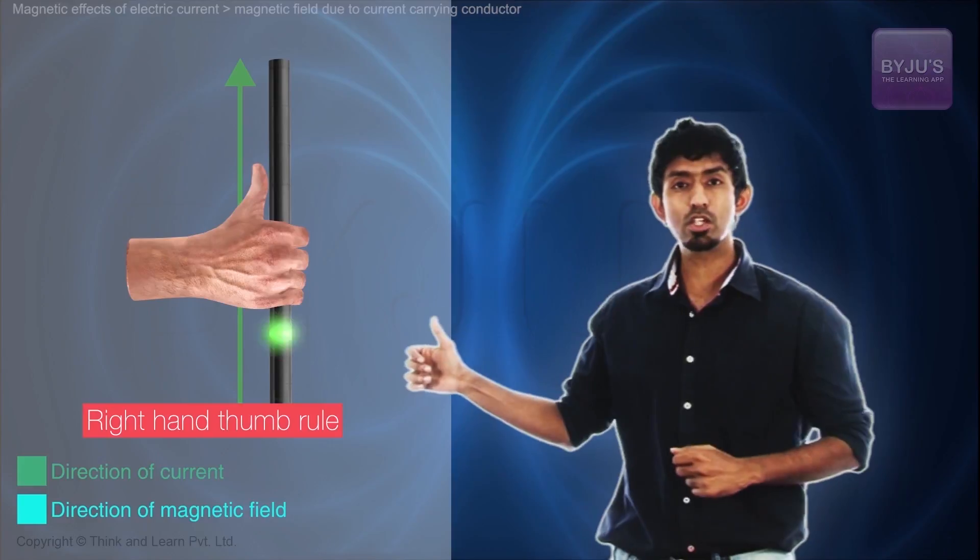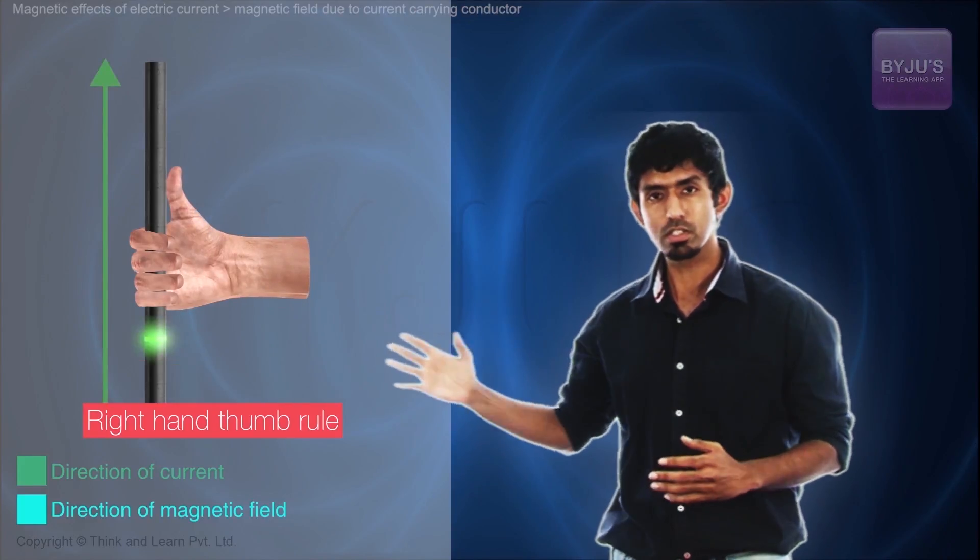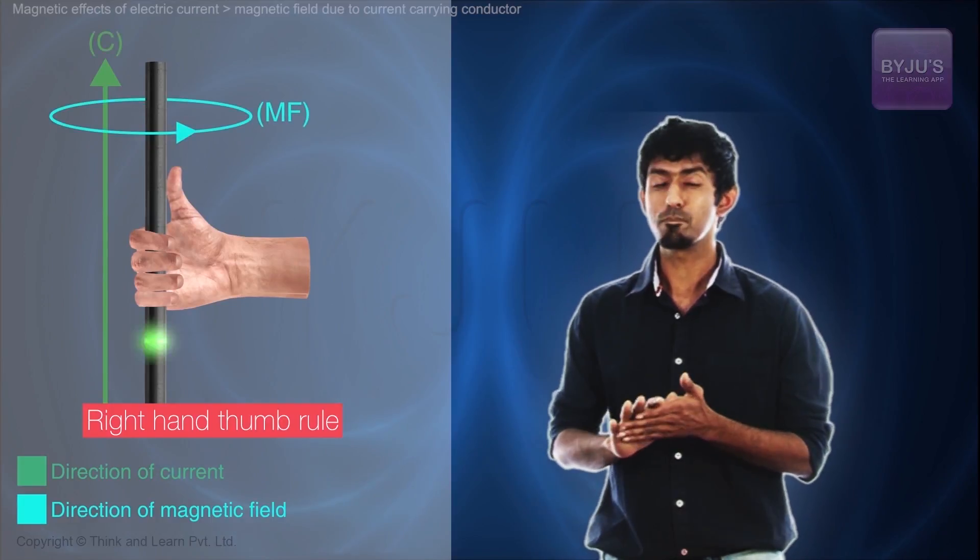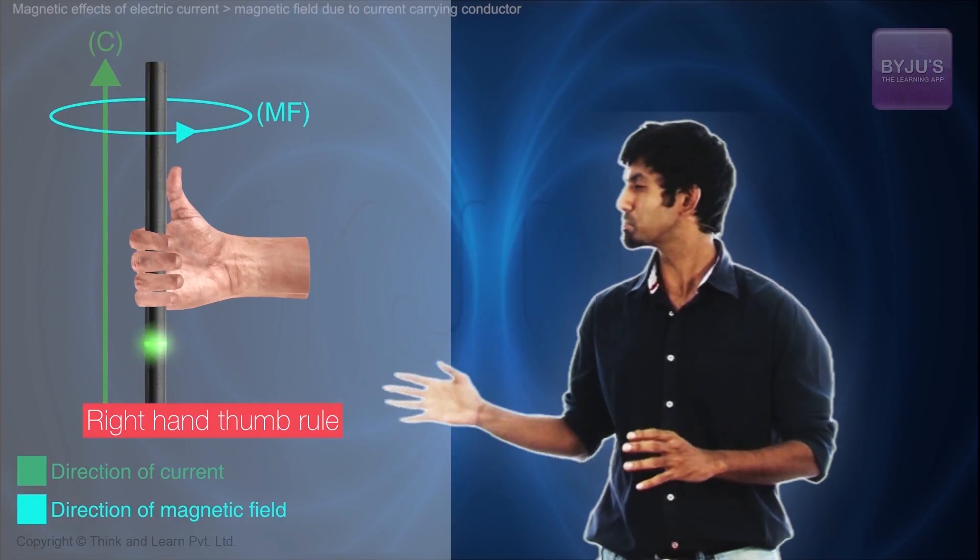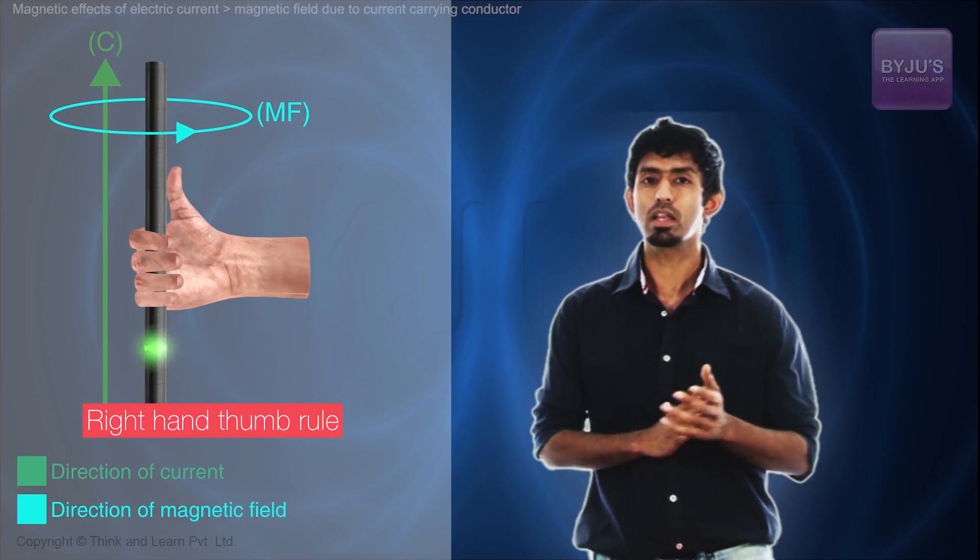Then, if I point with my thumb to the direction of the current, and if I curl my fingers, then the direction in which I curl my fingers gives me the direction of the magnetic field line. That's really useful. A very simple way to imagine a magnetic field because of a straight current carrying conductor.